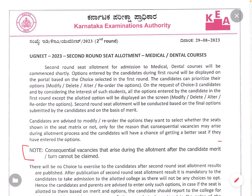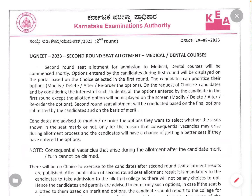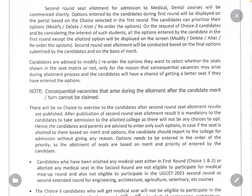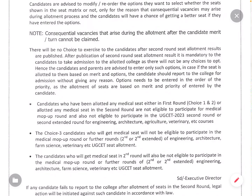An important note from the previous video: consequential vacancies that arise during the allotment after the candidate's merit turn cannot be claimed. There will be no choice to exercise for candidates after the second round seat allotment results. After publication of the second round seat allotment result, it is mandatory for candidates to take admission to the allotted college, as there will not be any choice to opt. Admission to the allotted college is compulsory.